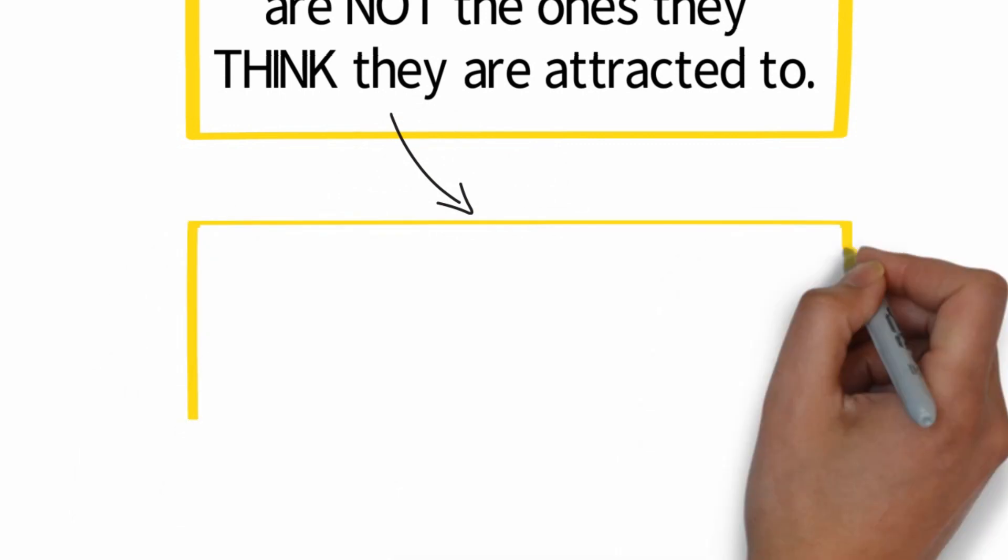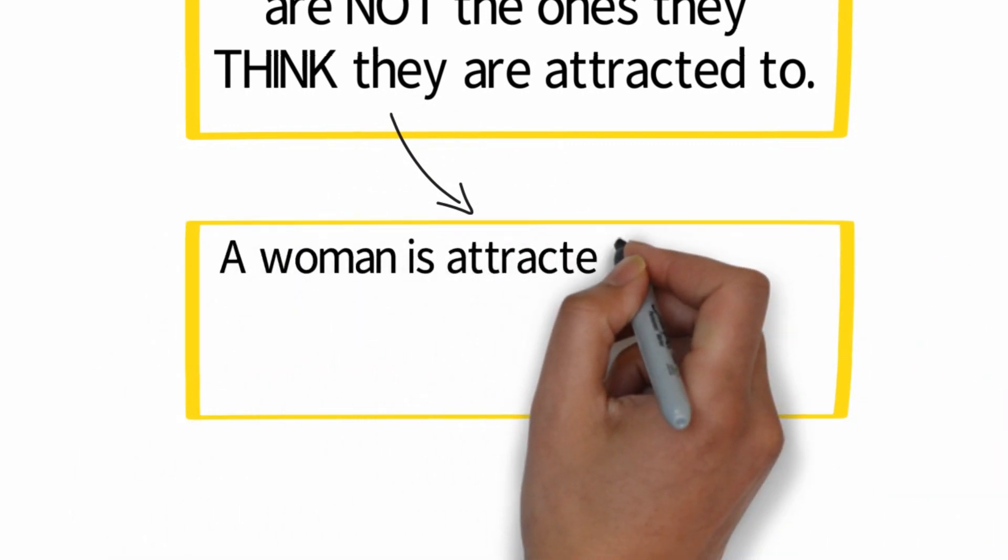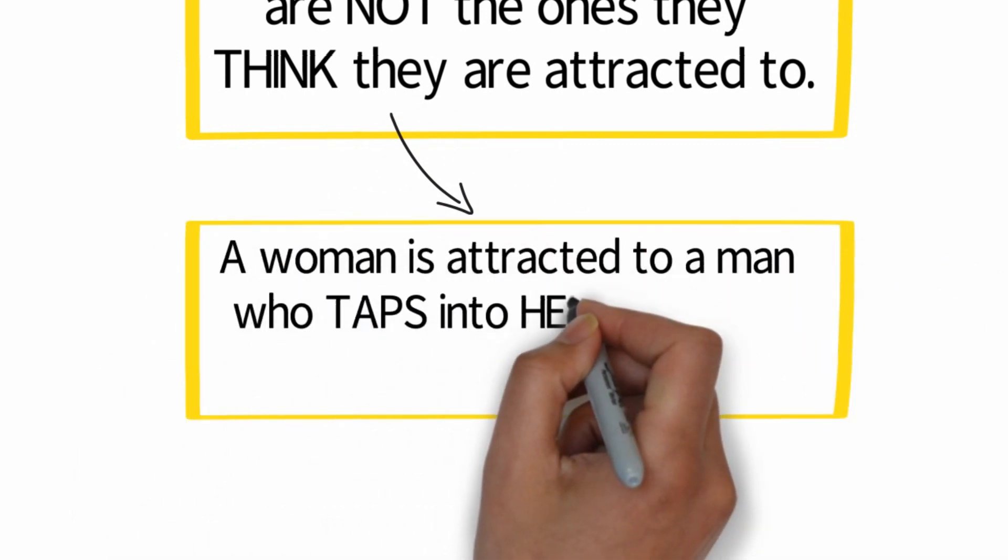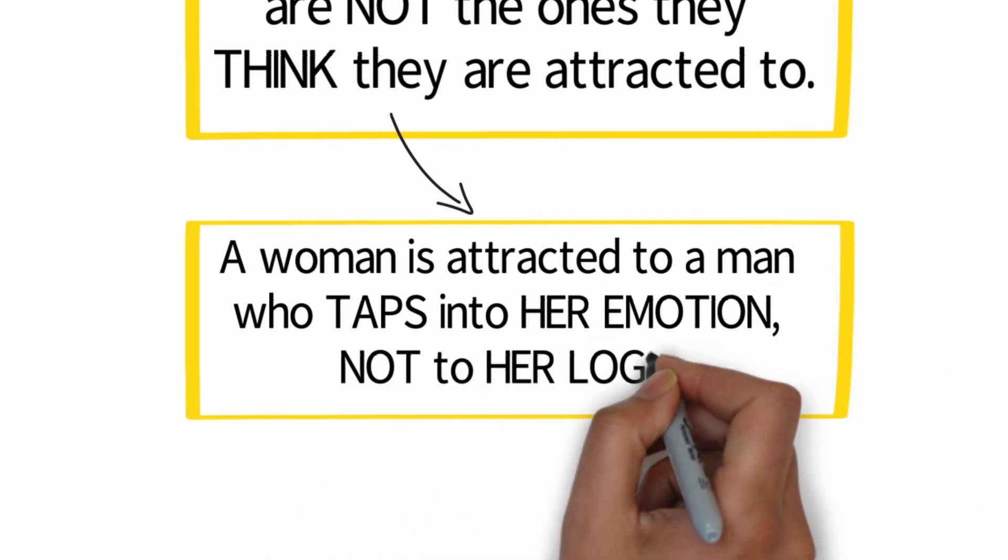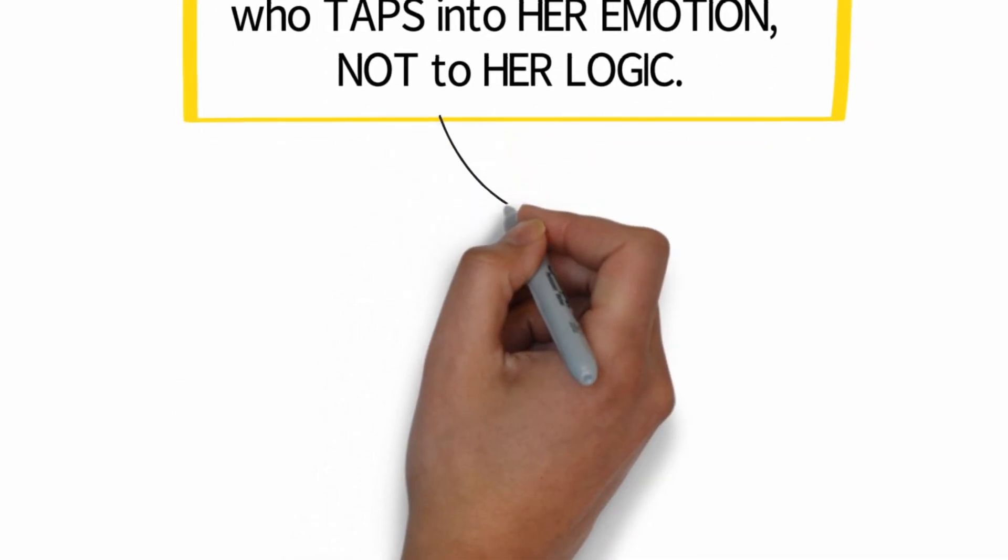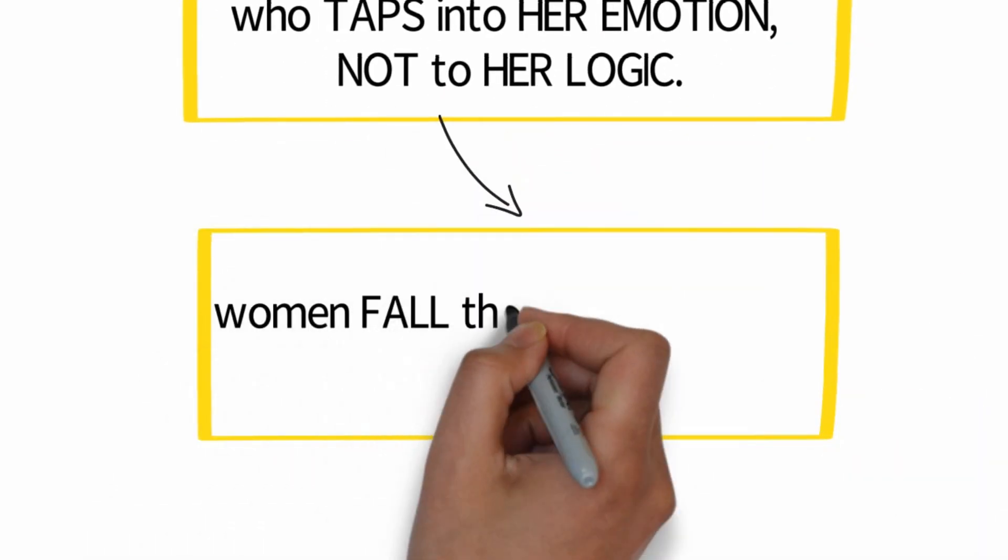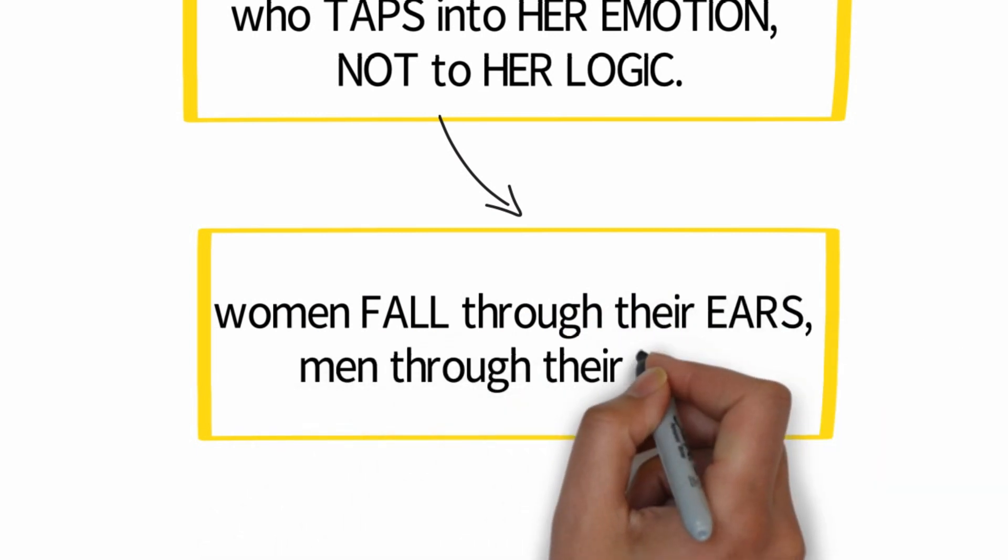Basically what it means is that a woman is attracted to a man who is able to tap into her emotions, not to her logic. This is why people say women fall through their ears and men through their eyes.